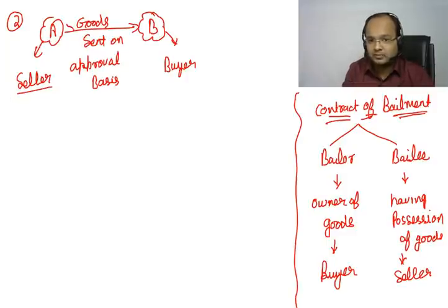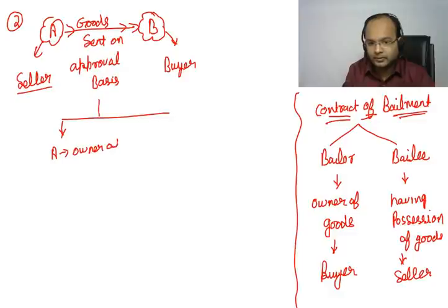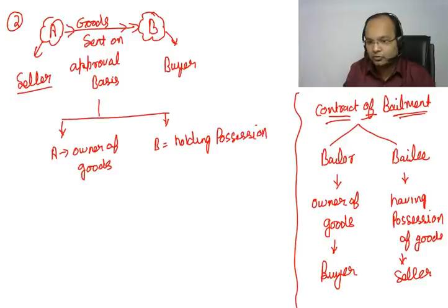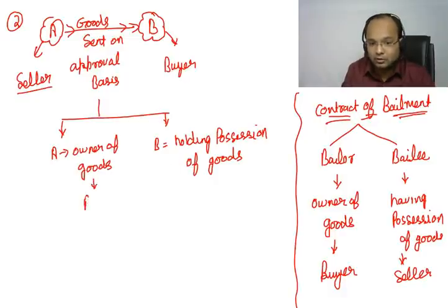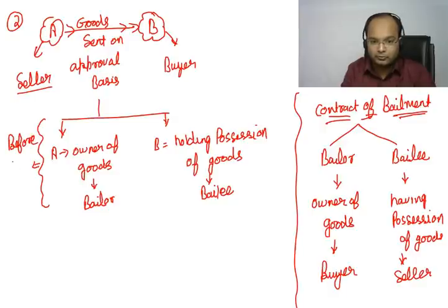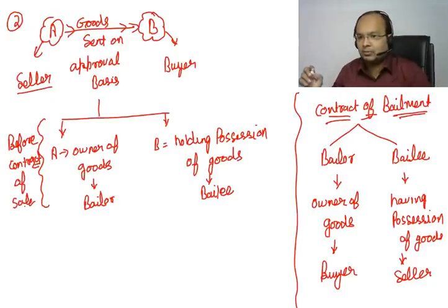Now think about this case: when goods were sent on an approval basis by A to B, at that time A was the owner of goods. B was holding the possession — the custody — of the goods. So A was the bailer, the owner of goods, and B was the bailee, holding the goods. This was the situation before the contract of sale.